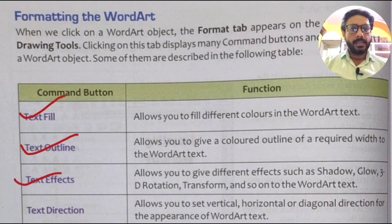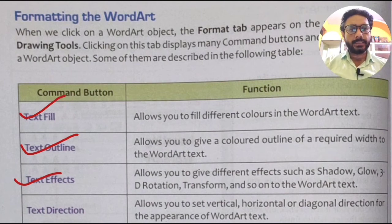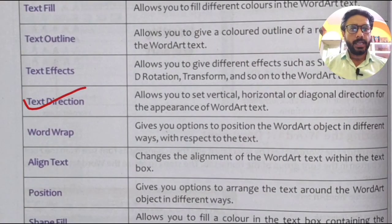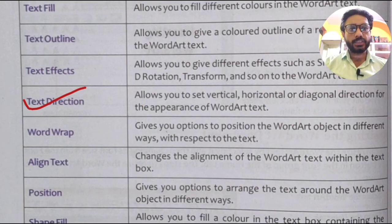Text Effects allows you to give different effects such as shadow, glow, 3D rotation, and transform to the Word Art text. We will select the Text Effects option to apply these styles. Text Direction allows you to set vertical, horizontal, and diagonal direction for the appearance of the Word Art text, using the Text Direction option.